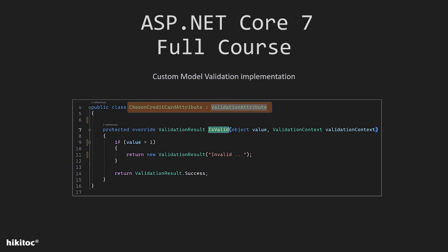As you may recall, all attributes we used for model validation in the previous lessons — such as Required, StringLength, and so on — generally inherit from the ValidationAttribute class. This class serves as a base class for creating custom validation attributes. Custom classes that inherit from the ValidationAttribute abstract class can be applied to properties in our models, allowing us to enforce specific validation logic and serve as constraints.